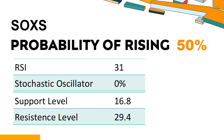The probability of SOXS share price rising is 50%. Combining multiple technical analysis indicators, SOXS has two bullish signals and five bearish signals. SOXS's short-term support level is 19.9; if it falls below 19.9, it will have a chance to test 16.8. The short-term resistance level is 24.9; if it breaks through 24.9, it will look up to 29.4.